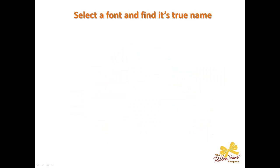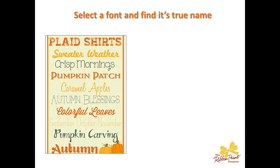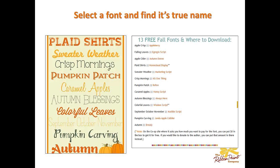Let's select a font and find its true name. Here's a post on our Pinterest board, and I've decided I like this font worded Pumpkin Patch. If I click on this post and scroll down a little bit, I'm going to find the details of the font. Here you can see Pumpkin Patch also has the word Bolton linked with it. Bolton is the true name of that font — they just typed the words Pumpkin Patch, but the font is really Bolton.